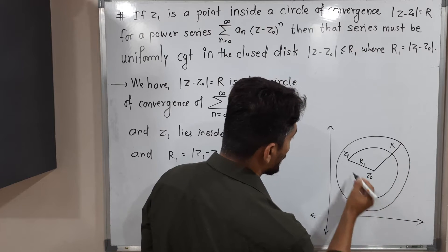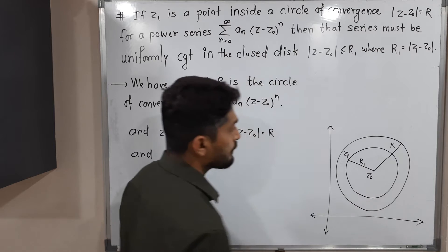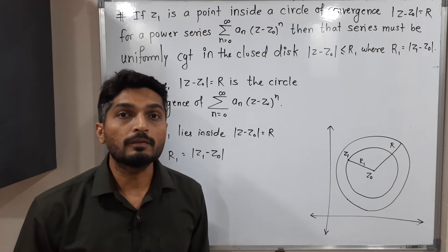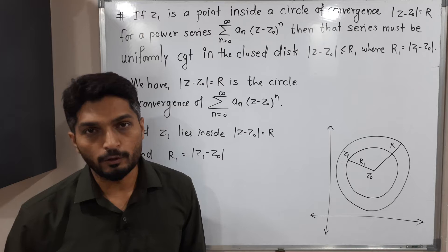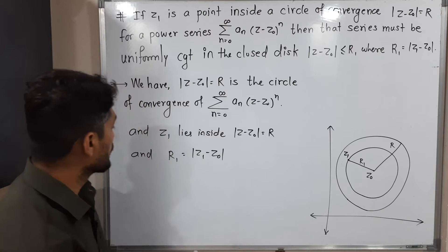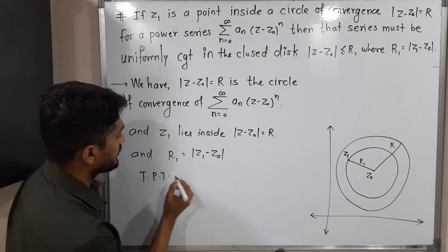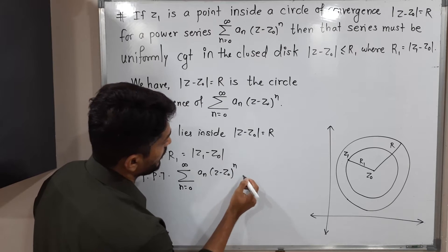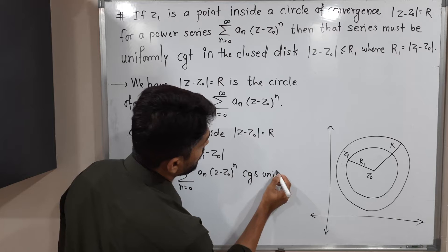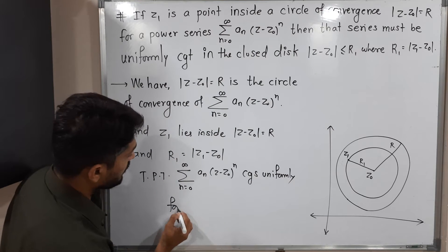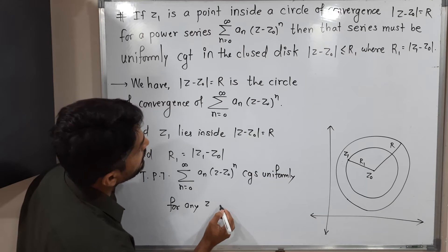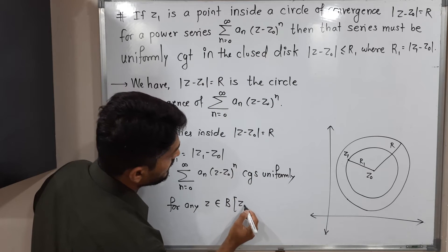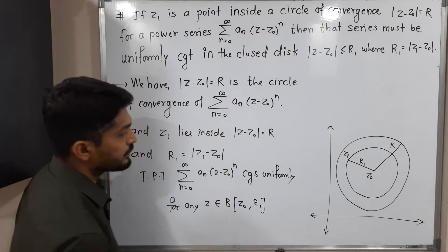We have to prove that for any point inside that small circle, or on the boundary of the circle, the same power series converges uniformly. So to prove: the summation from n = 0 to infinity of aₙ(z - z₀)ⁿ converges uniformly for any z belonging to the closed disk with center z₀ and radius r₁.